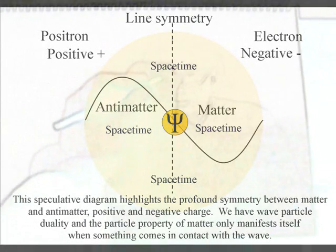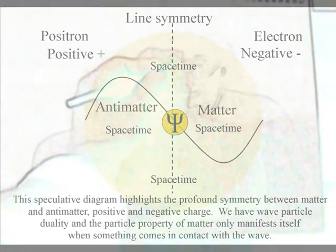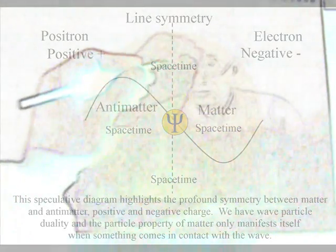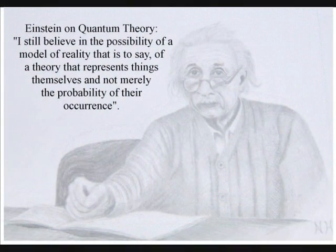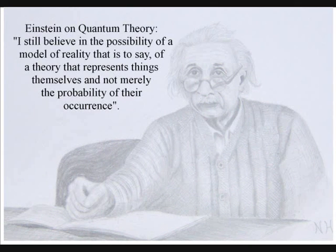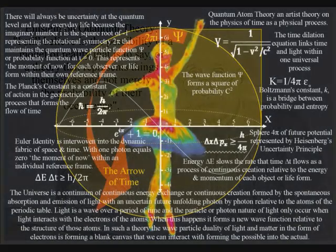In this theory, the antimatter annihilation represents the past being destroyed and becoming part of history, and the formation of a new quantum wave particle function or probability function represents future possibilities and opportunities at the smallest scale of the creative process.